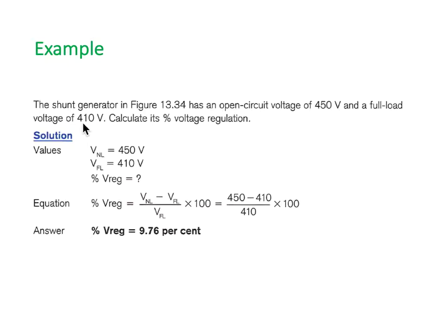Here's a quick example: a shunt generator has an open circuit voltage of 450 volts and a full load voltage of 410 volts. Calculate the percent regulation. Using our formula, 450 minus 410, divided by 410, times 100, gives us about 9.7 percent. So we'll have a voltage drop of roughly 10 percent between no load and full load. That's what voltage regulation means - what percent voltage drop will you experience with this particular generator.